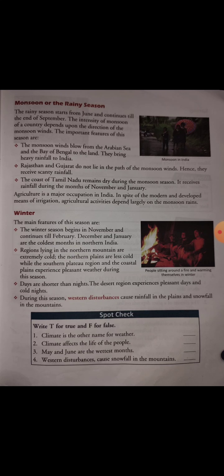Agriculture is a major occupation in India. 75% of Indian citizens occupy themselves in the profession of agriculture. In spite of modern and developed means of irrigation, agriculture activities depend largely on the monsoon rains. All the citizens of India believe that for agriculture the best source is rain, and for that they are truly dependent on the monsoon season.